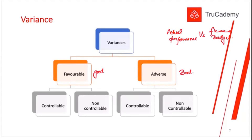Any variance, whether favorable or adverse, can be of two types: controllable and non-controllable. We will explain controllable from the perspective of a manager who is responsible for those variances. A production manager will only be responsible for the variances that arise inside the production department.